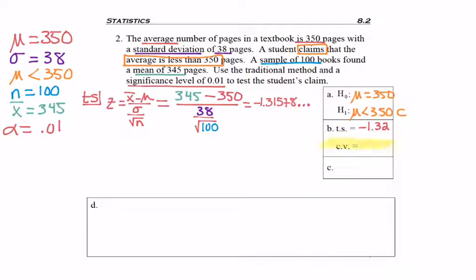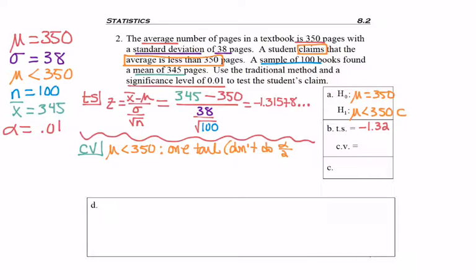I'm on to the next piece. Now notice the letter CV, because the traditional method uses a critical value. And so I'm just abbreviating critical value with CV. So to find the CV, I want to start with the statement μ is less than 350, which tells me I have a one tail test. There's two pieces of information I get from that. First is that I do not cut alpha in half. I'm just going to take all of alpha. I do not do alpha divided by 2 because all of my alpha is in only one tail.